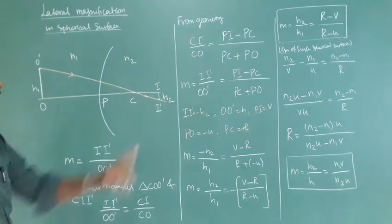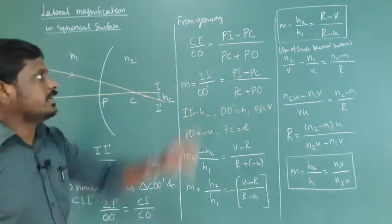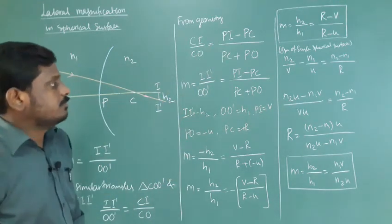CO equals PC plus PO. So magnification M equals II' by OO' equals CI by CO. Instead of CI by CO, we can write PI minus PC divided by PC plus PO.